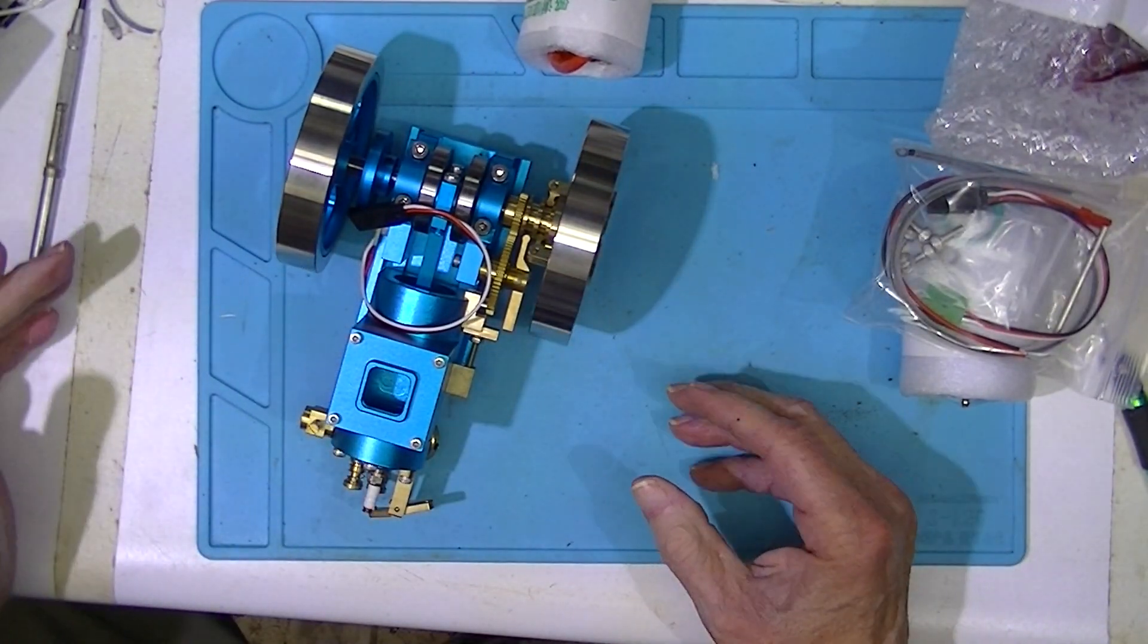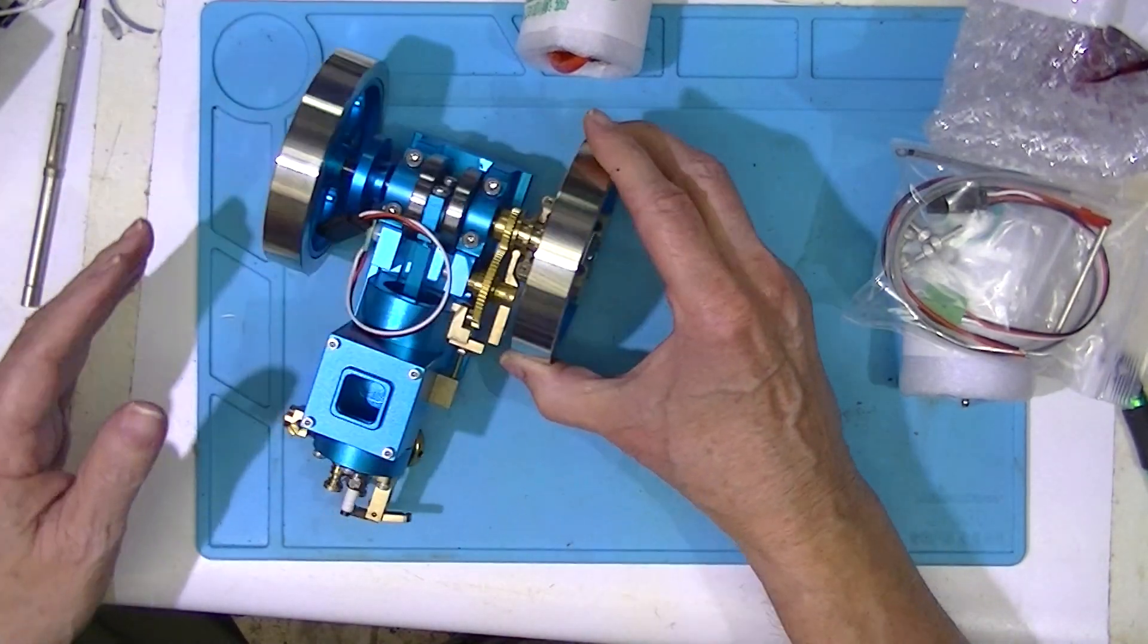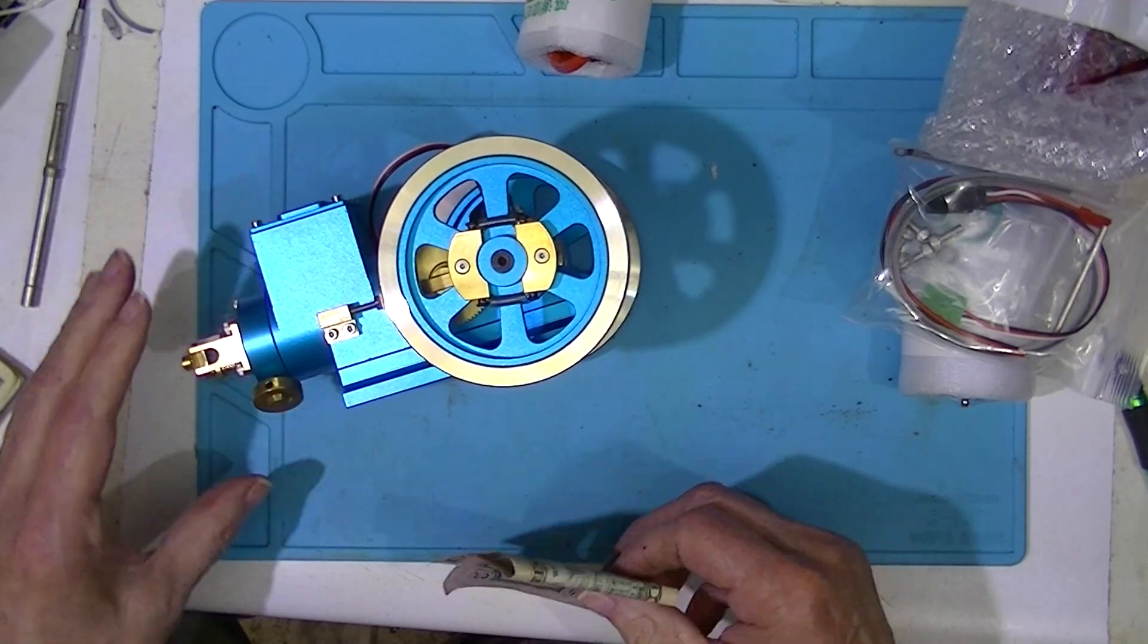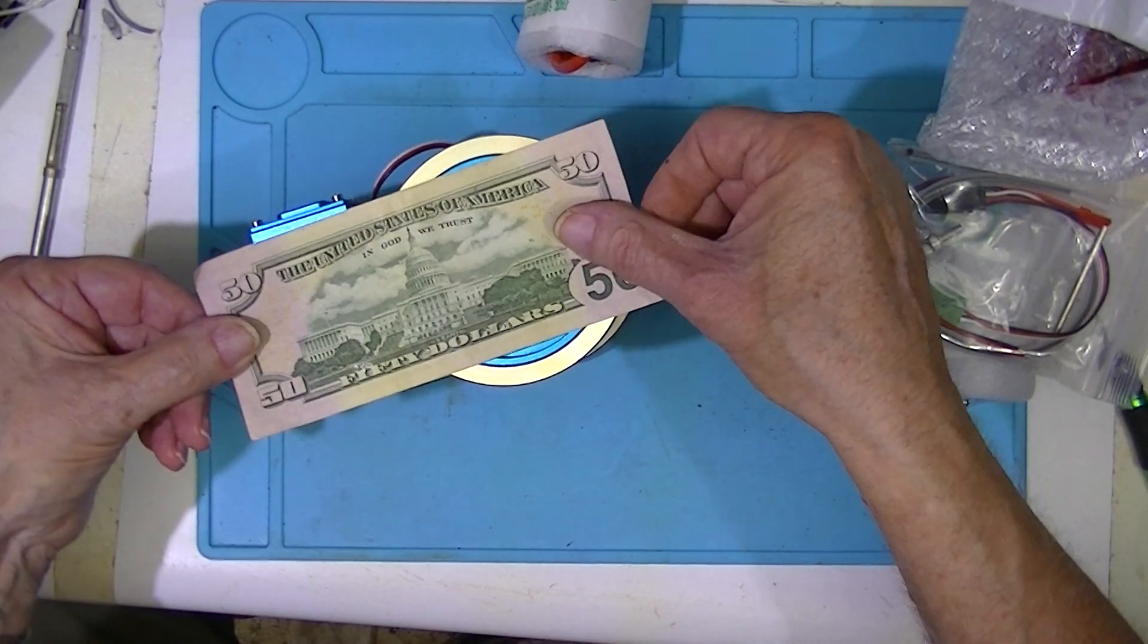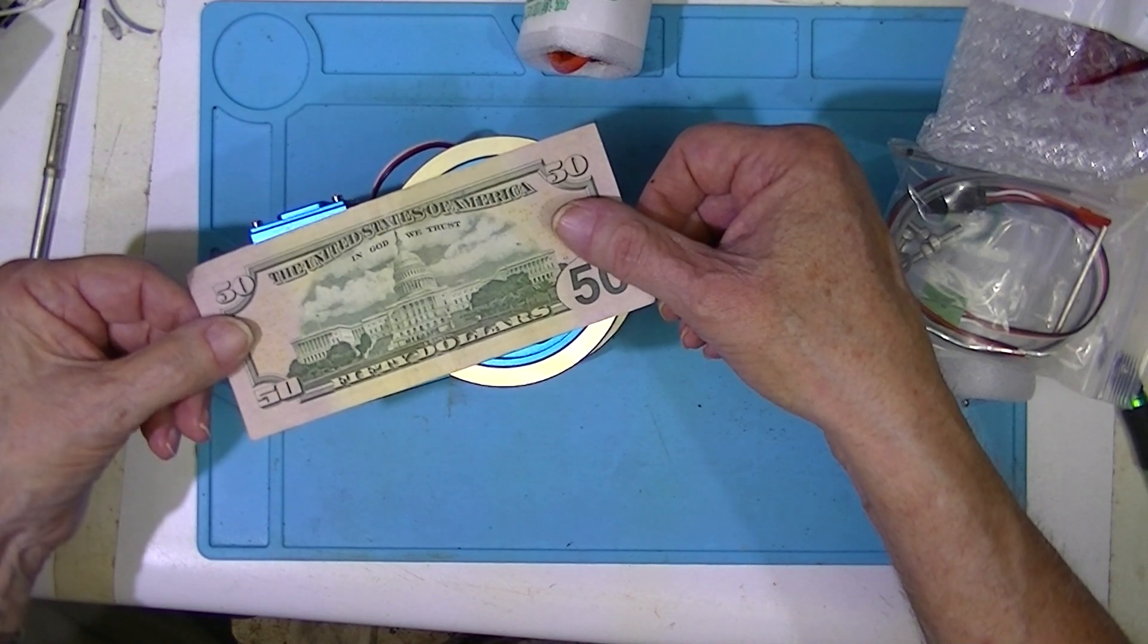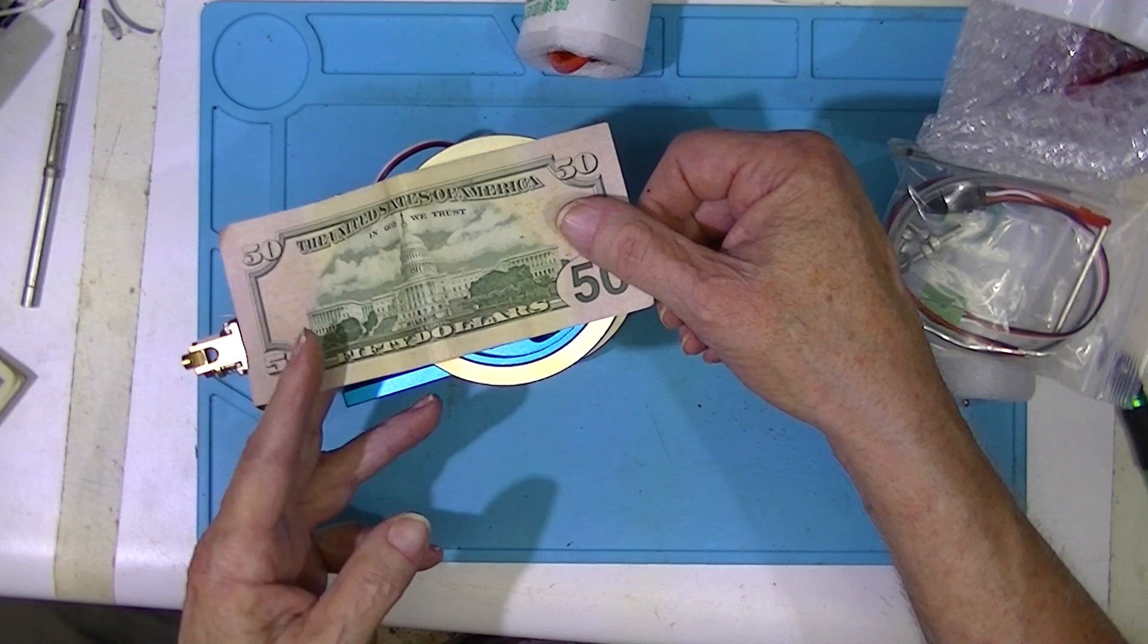This is a very small engine. You can see the diameter - there's the engine on its side, and you can see it's a little tiny bit bigger than a $50 bill and costs over four times as much.